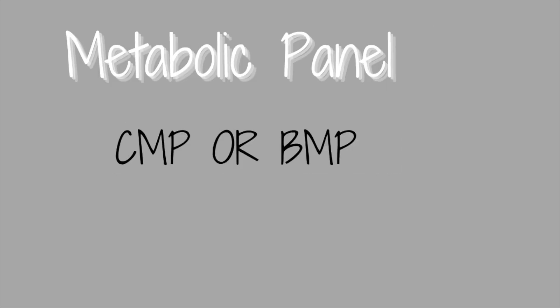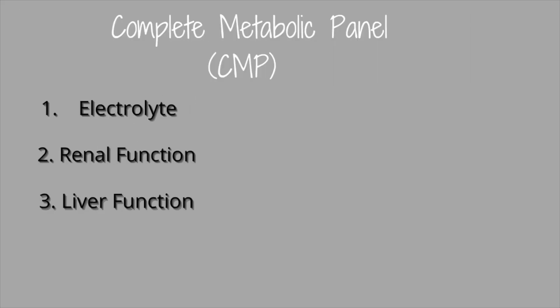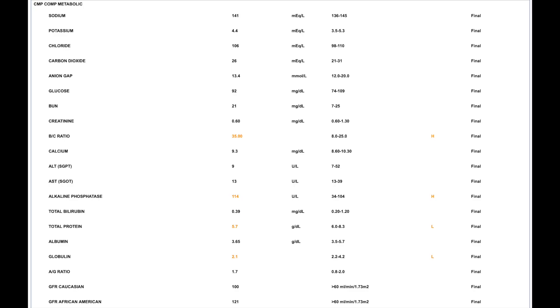So what is your metabolic panel? Your metabolic panel is either your CMP or your BMP. The CMP is the complete metabolic panel, and the BMP is the basic metabolic panel. When you order a CMP on a patient, you are checking their electrolytes, their renal function, and their liver function. For electrolytes that means potassium, sodium, chloride, and things like that.